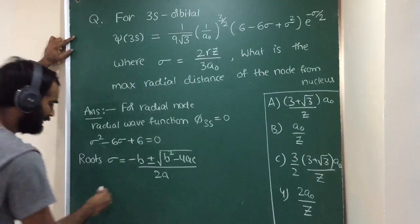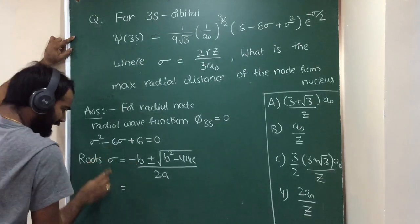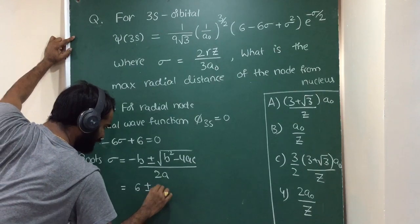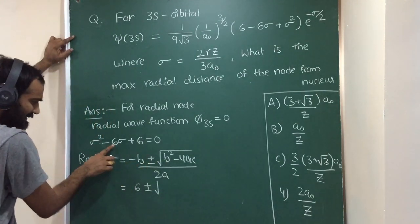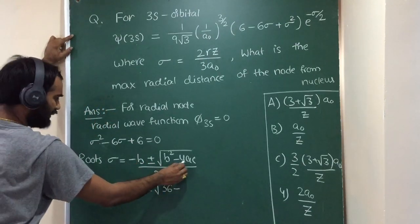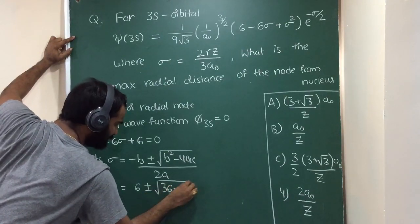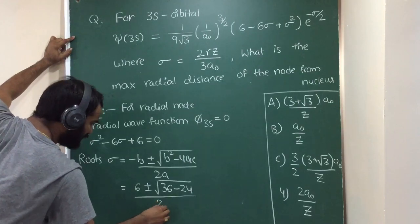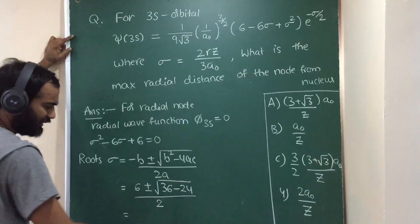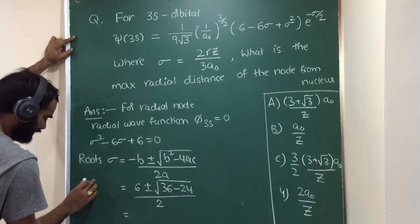Then minus of minus 6, which is 6, plus or minus root b square, 6 into 6, 36, minus 4 into 1 into 6, 24, by 2 into 1. Then 36 minus 24, which is root 12.